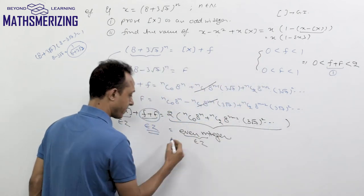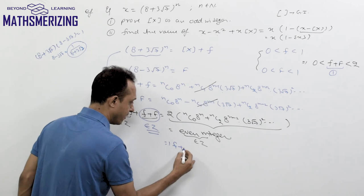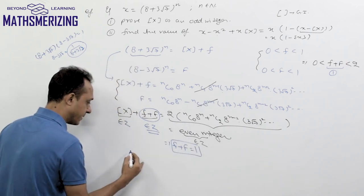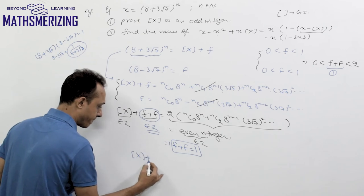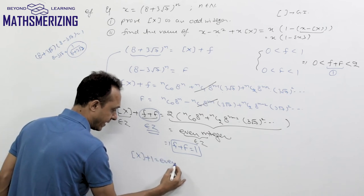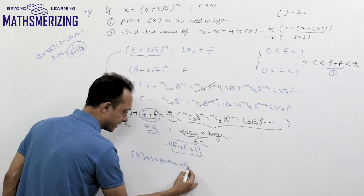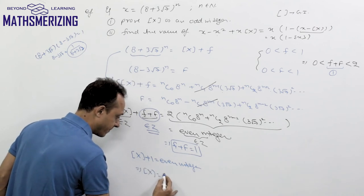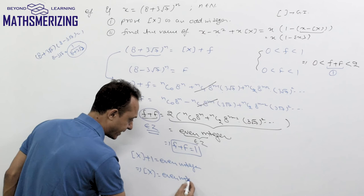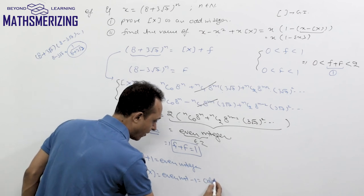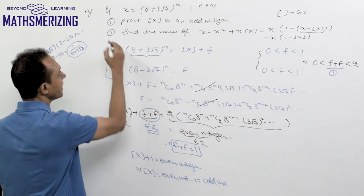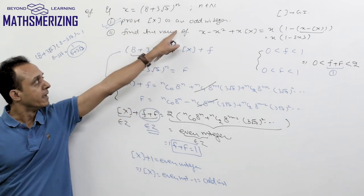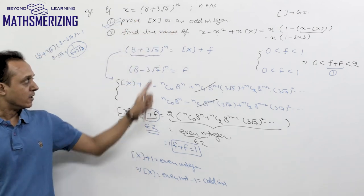Therefore f + F = 1, which means [x] + 1 is an even integer, so [x] = even integer − 1, which is an odd integer. Hence the greatest integer part of the given binomial expression is an odd integer.